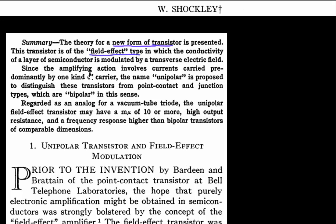And the amplification action in this transistor involves current carried by one kind of carrier. That's why it's called unipolar transistor. For example, the previous design which was based on this PN junction, they involve transport of both electrons and holes. So this was a bipolar design. But he's saying this new kind of transistor involves only one kind of carrier. That's why it's a unipolar field effect transistor.